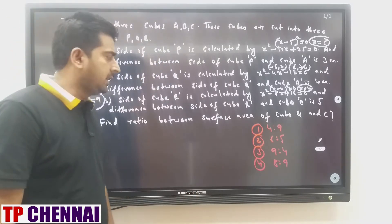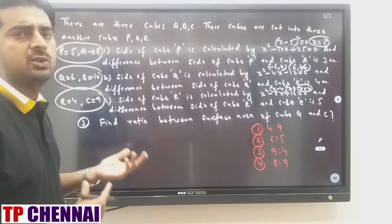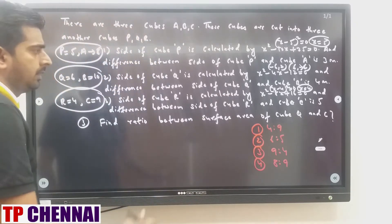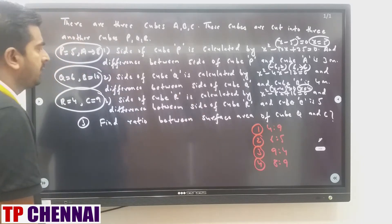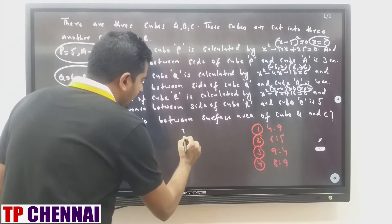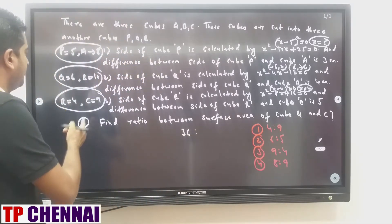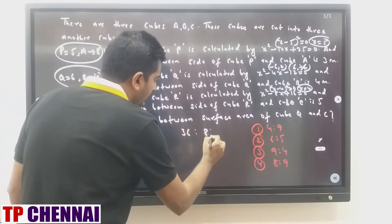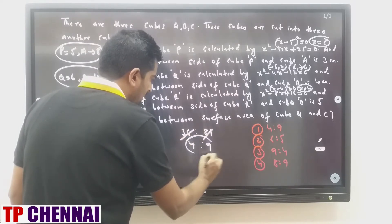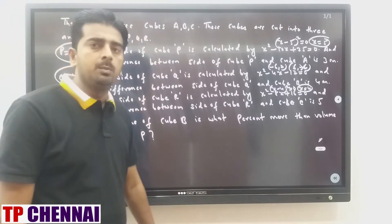Question 3: find the ratio between the surface area of cube Q and cube C. Since both have 6 × side², the 6 cancels. Cube Q: side = 6, 6² = 36. Cube C: side = 9, 9² = 81. Ratio = 36:81 = 4:9. Answer is the first option.